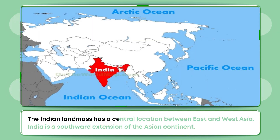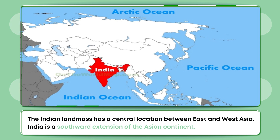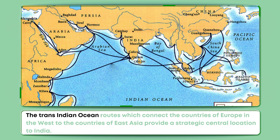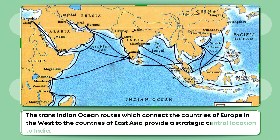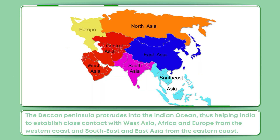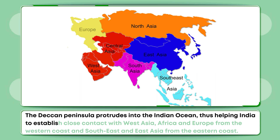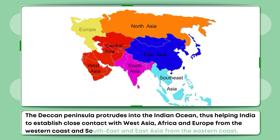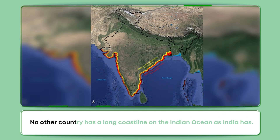The Indian landmass has a central location between East and West Asia. India is a southward extension of the Asian continent. The Trans-Indian Ocean routes which connect the countries of Europe in the west to the countries of East Asia provide a strategic central location to India. The Deccan Peninsula protrudes into the Indian Ocean, thus helping India to establish close contact with West Asia, Africa and Europe from the western coast, and Southeast and East Asia from the eastern coast. No other country has as long a coastline on the Indian Ocean as India.